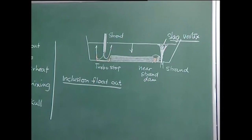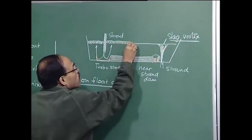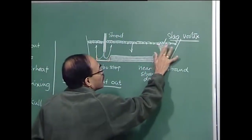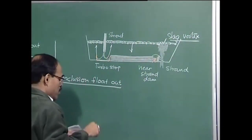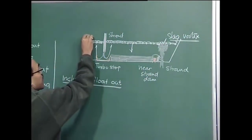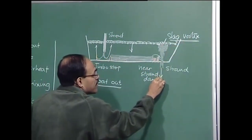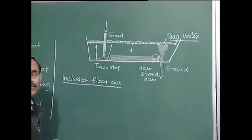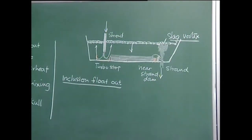Imagine a Tundish which is completely filled. We have the slag layer here, and there is no slag vortex because the bath height is too much. It is only when the bath height falls to a lower level that there will be some slag vortexing. At this stage, the Tundish is operated under steady state — the bath height is maintained constant and so is the casting rate. The amount of molten metal coming into the Tundish is exactly equal to the amount going out, giving a constant bath depth. This is known as the steady state operation of the Tundish.